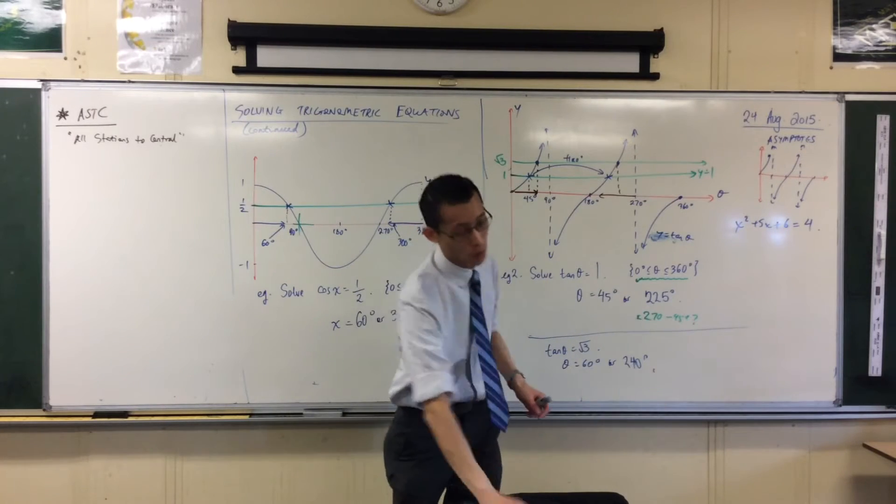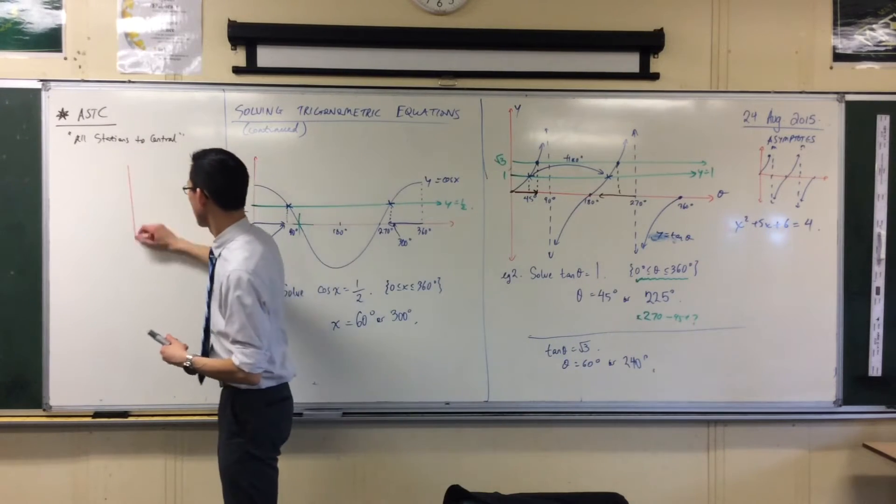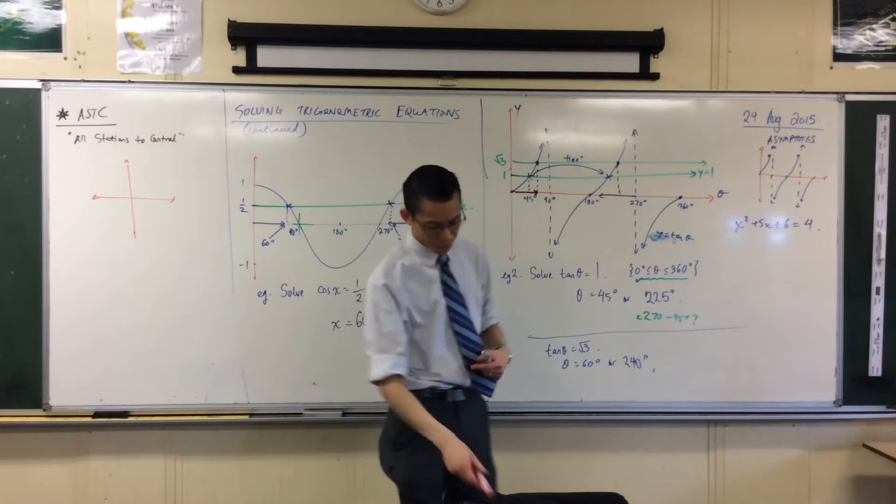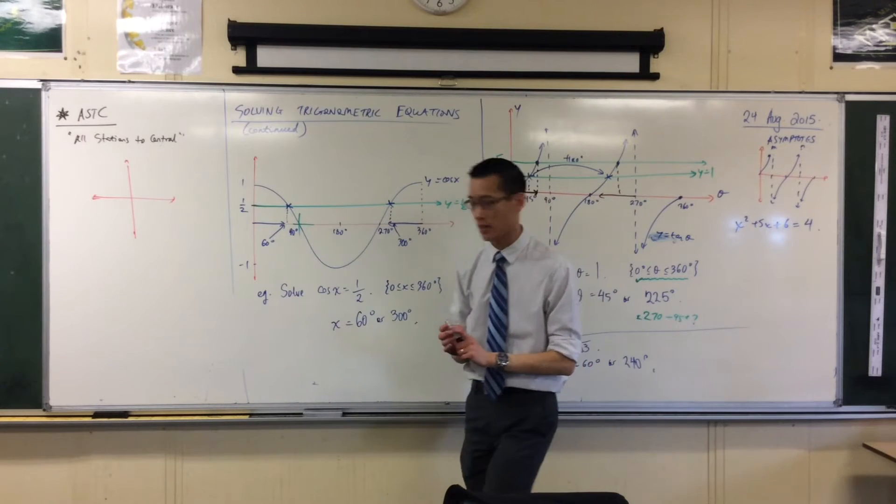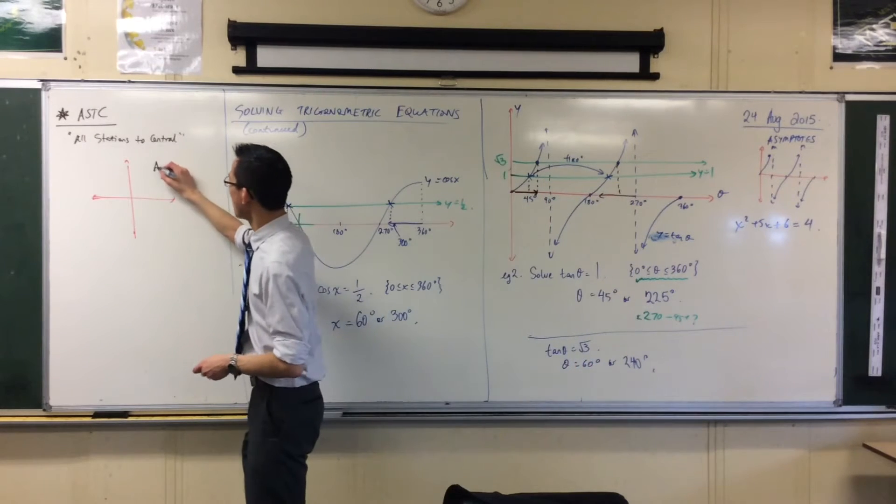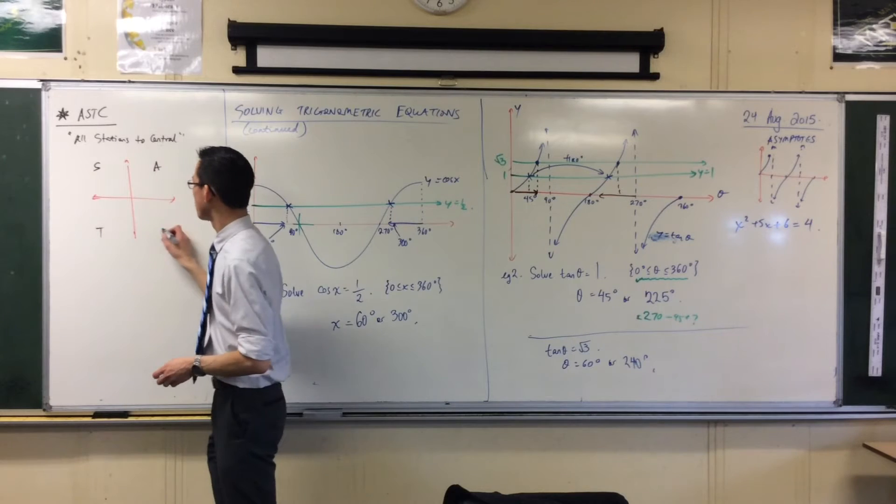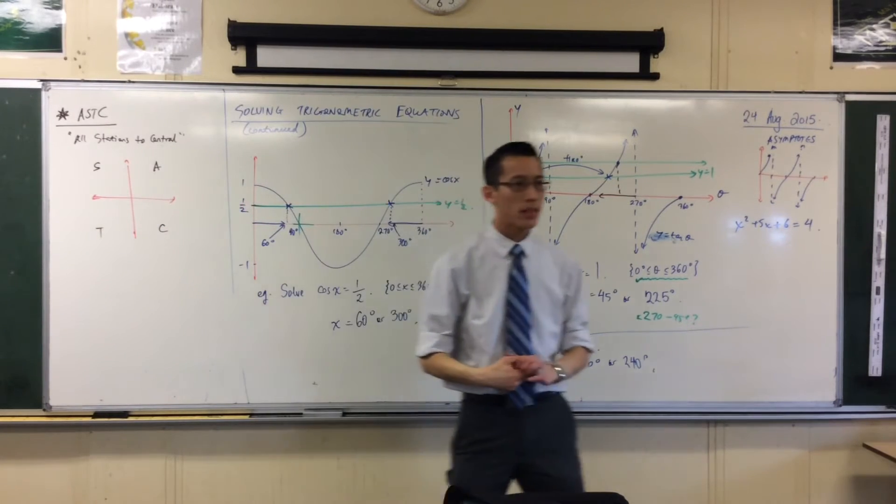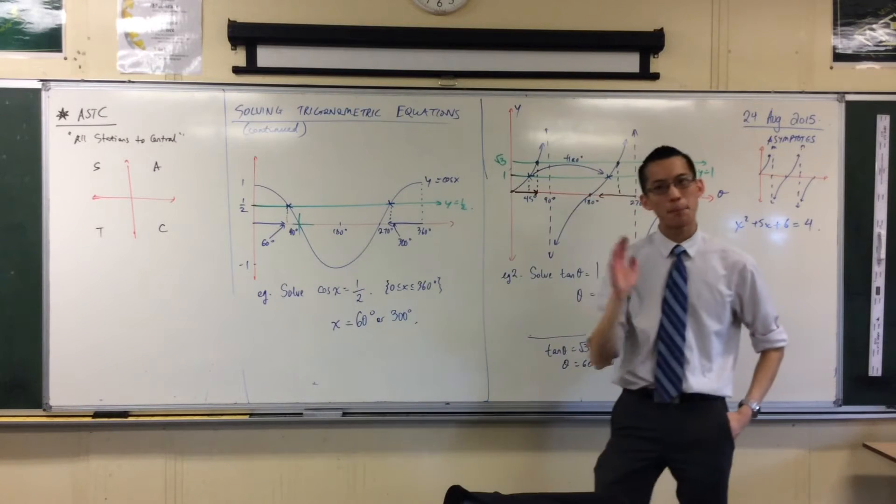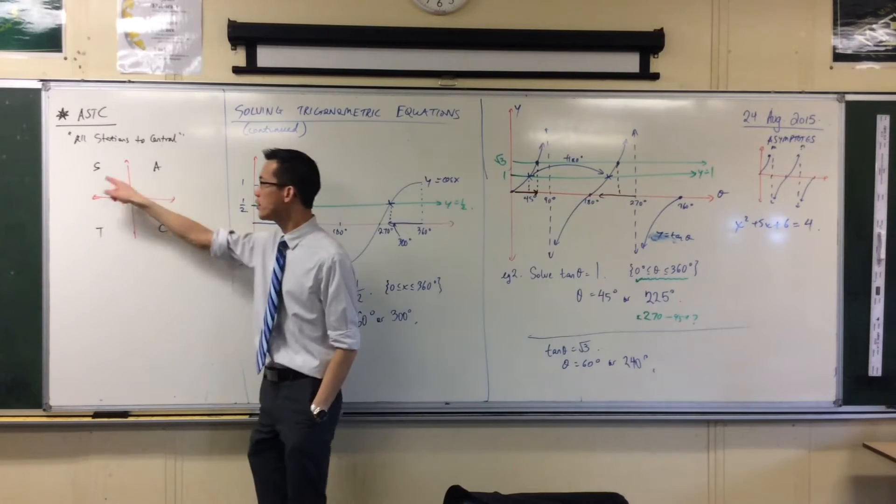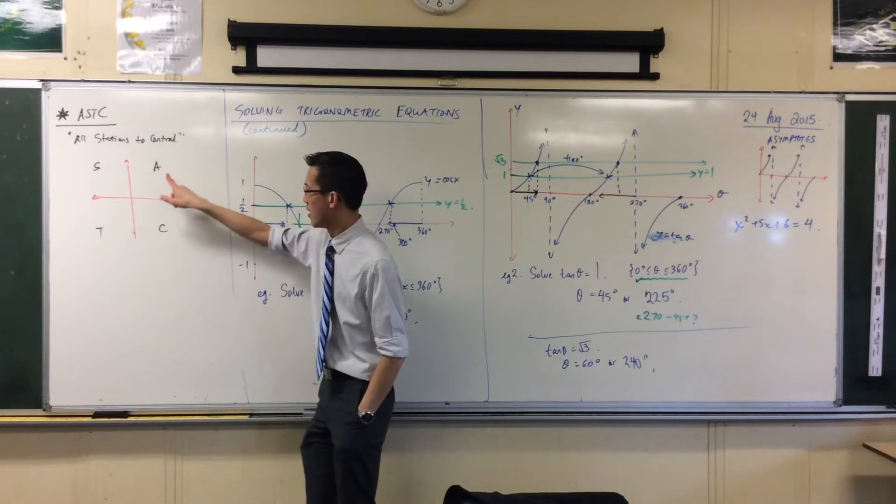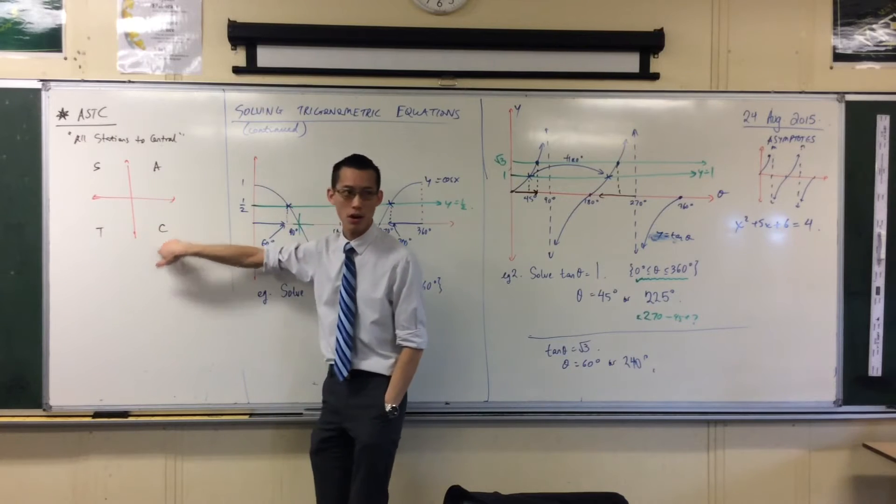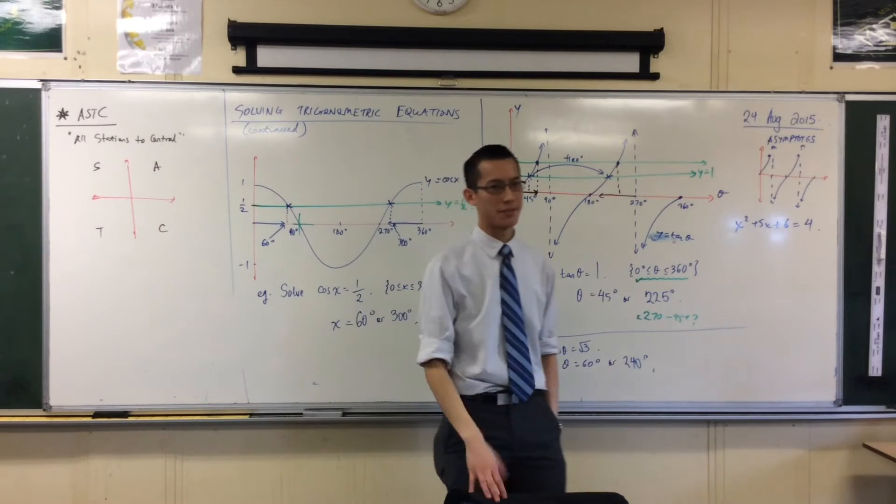The reason it's useful is if you draw yourself a set of axes like this. I could put the unit circle on here, I don't need to for now. If I write these letters in order going from first to second, third and fourth quadrants, what this indicates is for a particular angle, which of the trig ratios—all of them, just sine, just tan or just cos—which of them are positive.